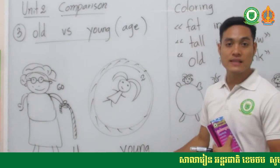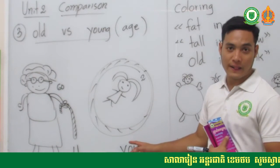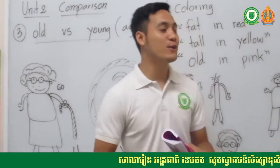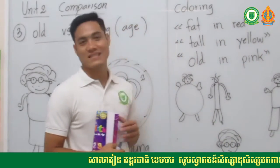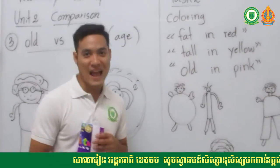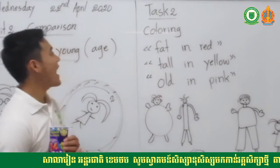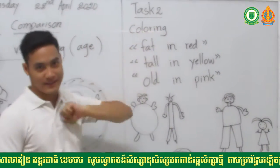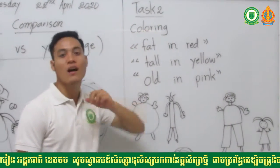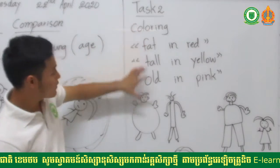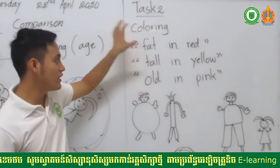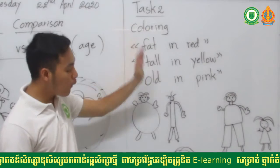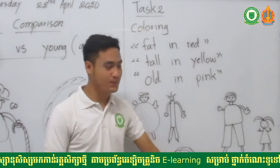That's the lesson for old and young. Now let's go to exercise two — your task two is a coloring activity. Read these three instructions carefully before doing your task.